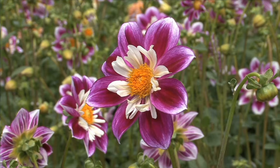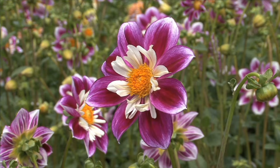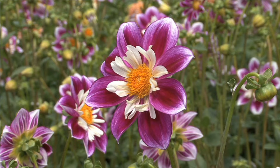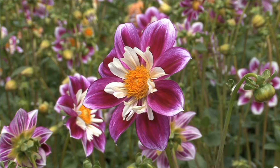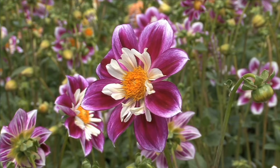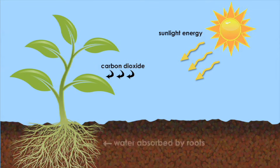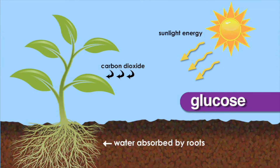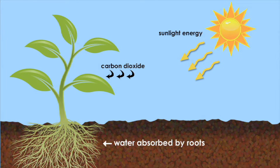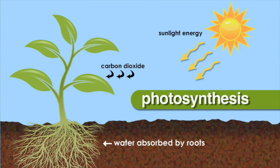Plants are producers because plants produce their own food. Plants use energy from the sun, carbon dioxide from the air, and water to produce glucose. This process is called photosynthesis.